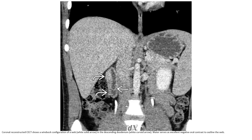Contrast-enhanced CT demonstrates a windsock appearance of the web in the descending duodenum. Water or negative oral contrast is excellent for outlining the web.